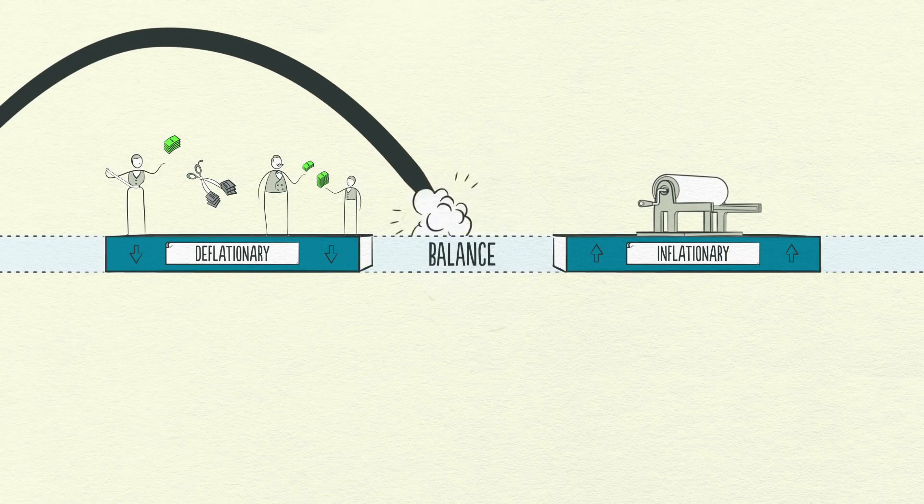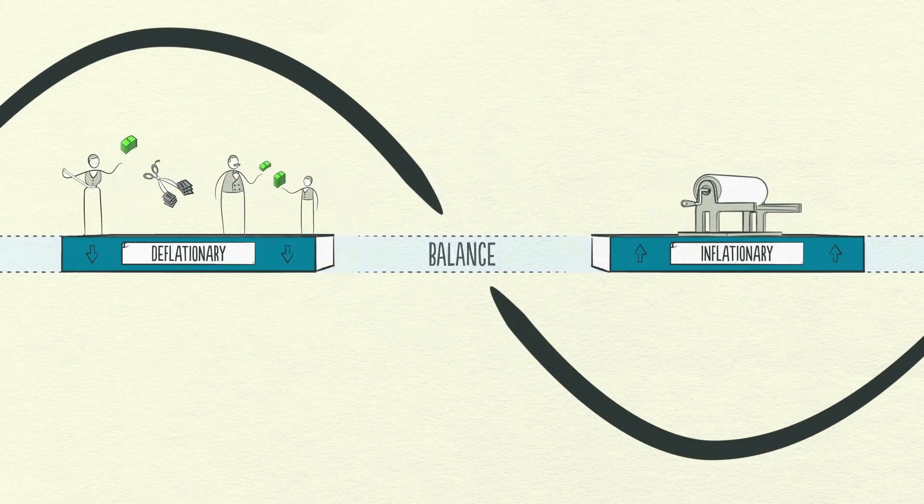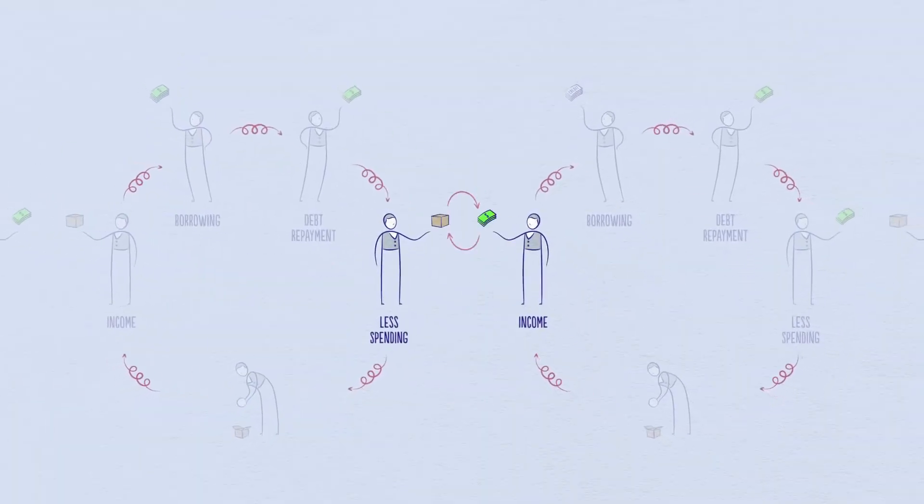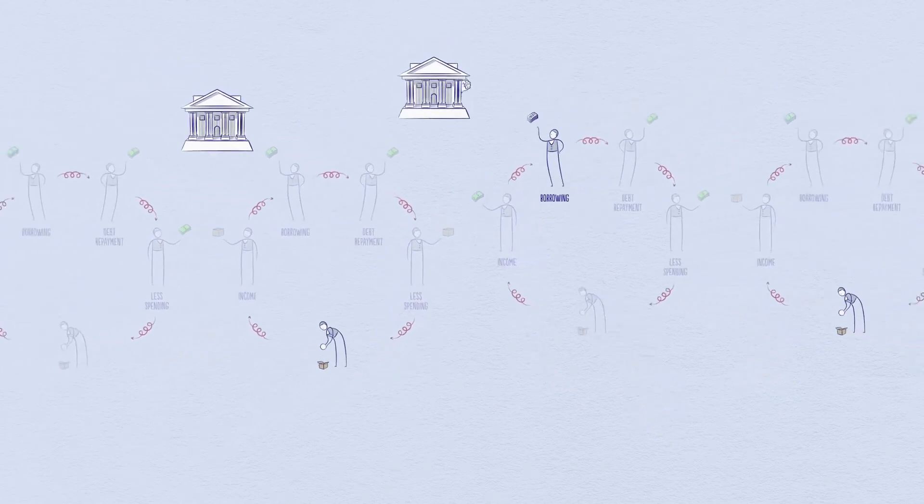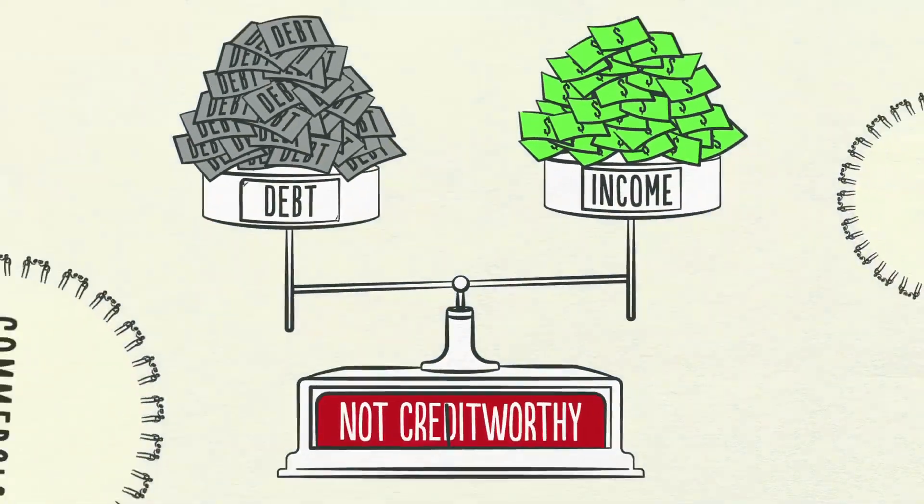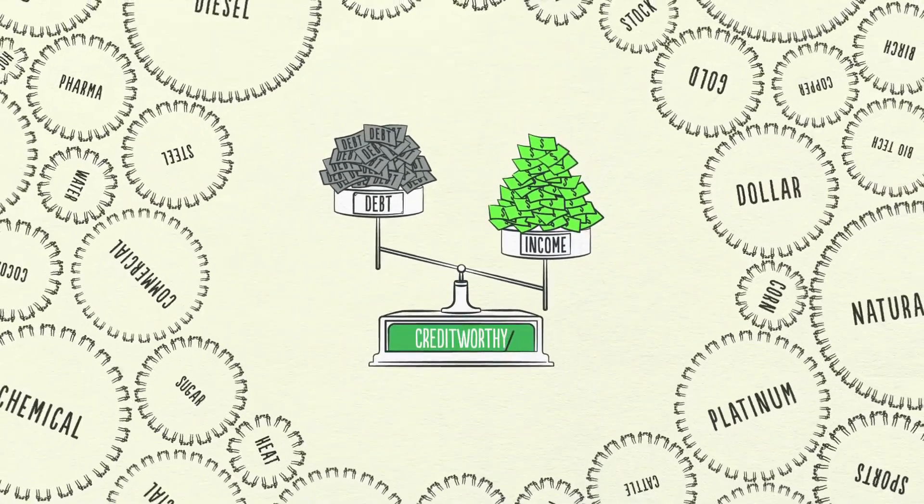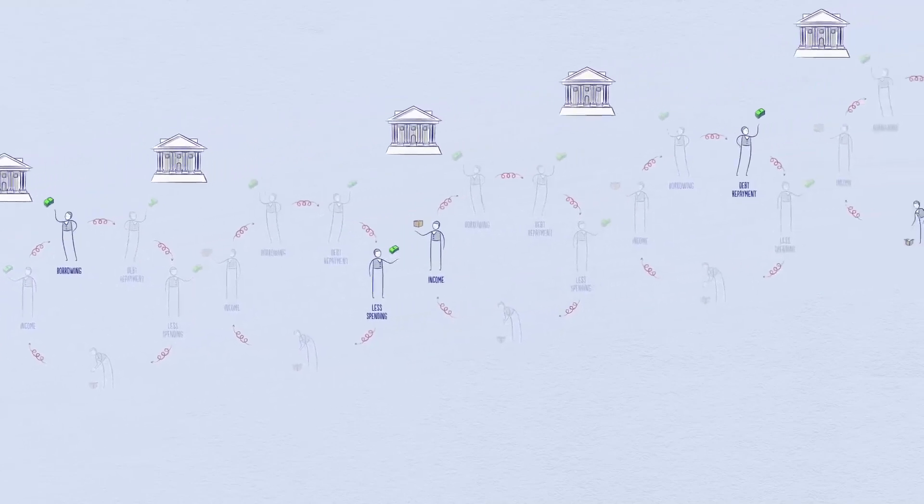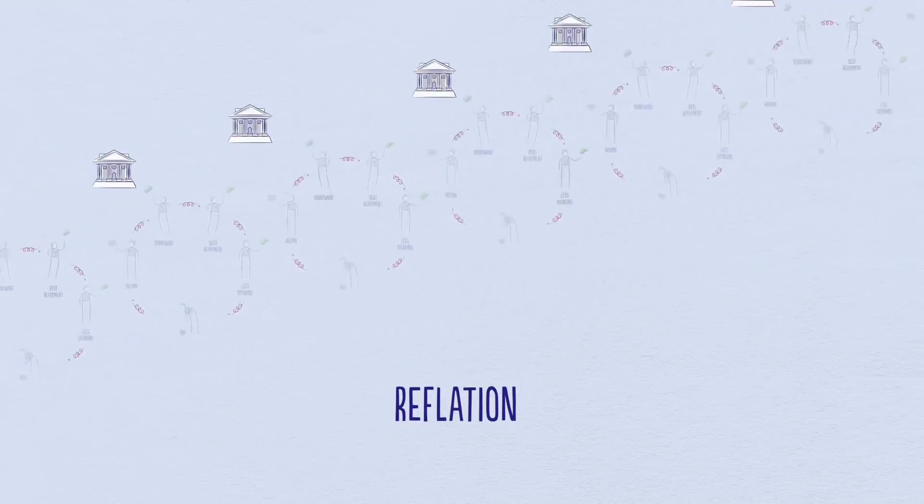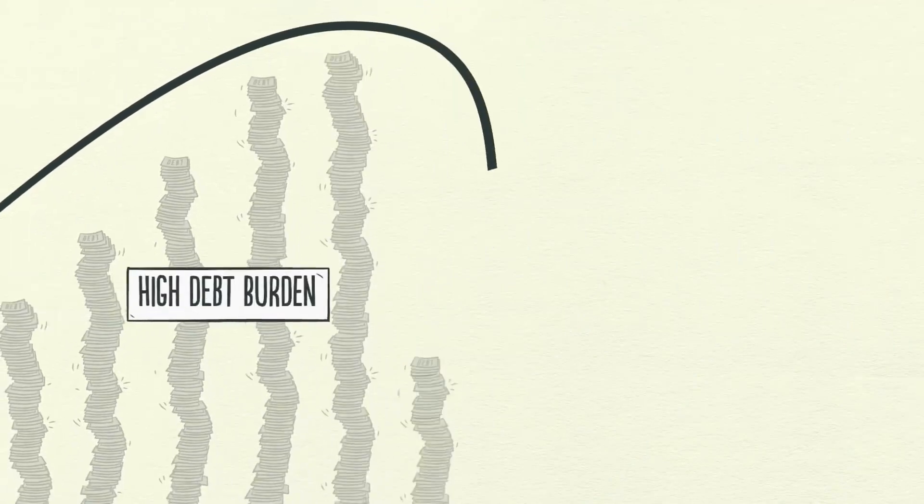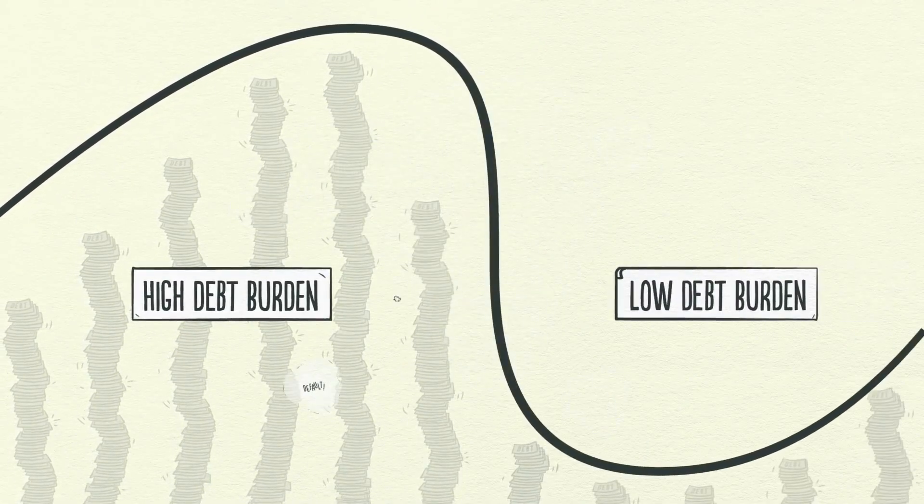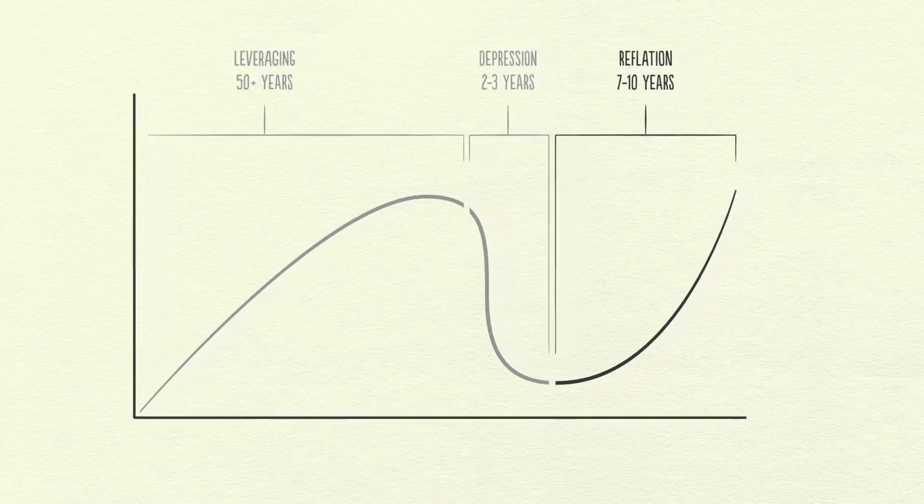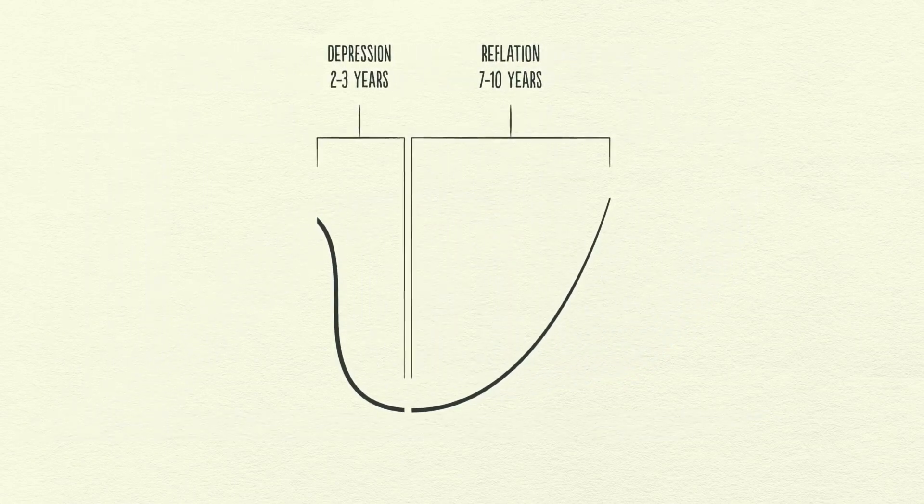If policymakers achieve the right balance, a deleveraging isn't so dramatic. Growth is slow, but debt burdens go down. That's a beautiful deleveraging. When incomes begin to rise, borrowers begin to appear more creditworthy. And when borrowers appear more creditworthy, lenders begin to lend money again. Debt burdens finally begin to fall. Able to borrow money, people can spend more. Eventually, the economy begins to grow again, leading to the reflation phase of the long-term debt cycle. Though the deleveraging process can be horrible if handled badly, if handled well, it will eventually fix the problem. It takes roughly a decade or more for debt burdens to fall and economic activity to get back to normal, hence the term lost decade.